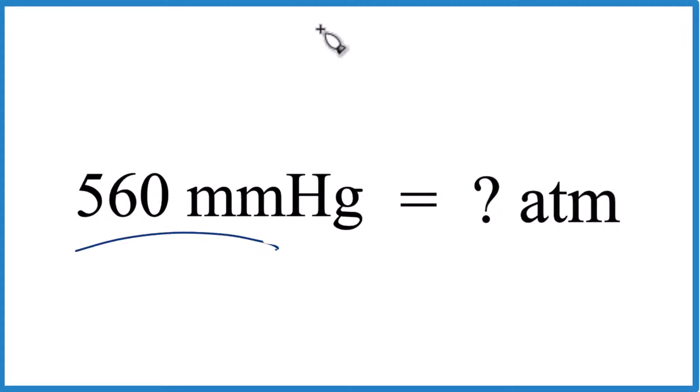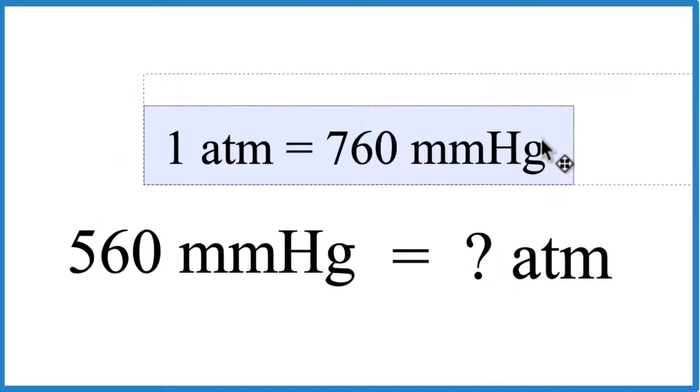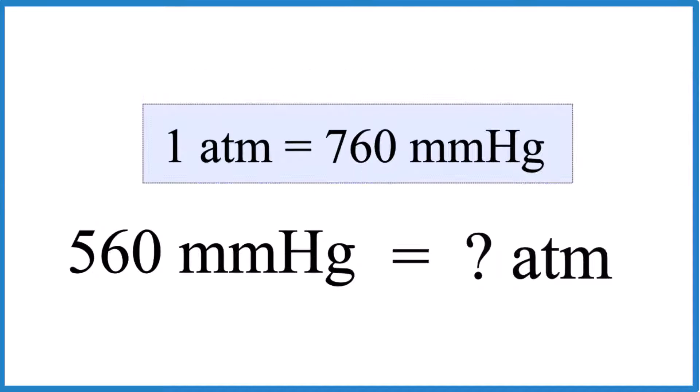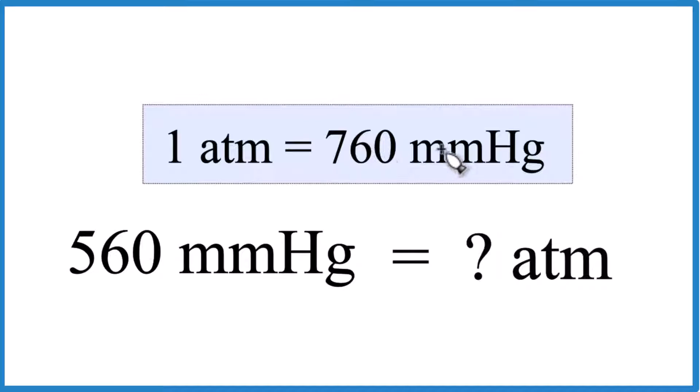Let's convert 560 millimeters of mercury to atmospheres. Here's how you do that. You need to know that one atmosphere, that's equal to 760 millimeters of mercury. That's called our conversion factor.